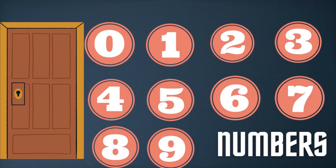Hello dear kids, today we will discuss one-digit subtraction. One-digit subtraction involves subtracting two single-digit numbers from each other. Here are digits from 0 to 9 which are used in one-digit subtraction.